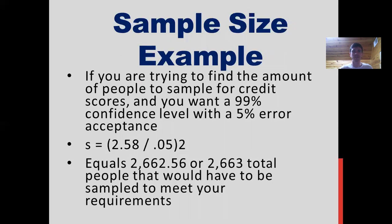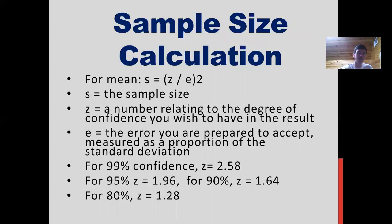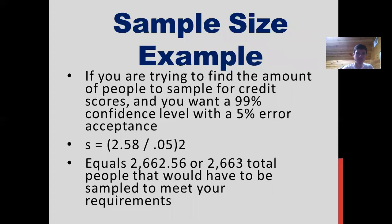For example, if you're trying to find the number of people to sample for credit scores, and you want a 99% confidence level with a 5% error acceptance: 99% gives Z = 2.58, so you calculate 2.58 divided by 0.05, then square that result. Plugging that into a calculator gives roughly 2,663 people — that's the number you would need to sample to meet those metrics.